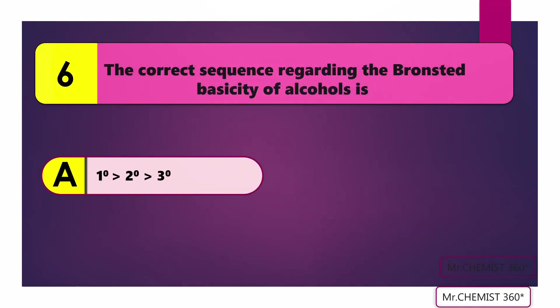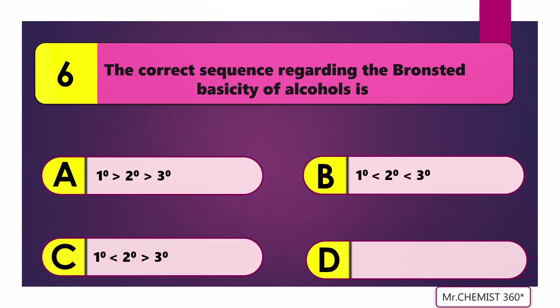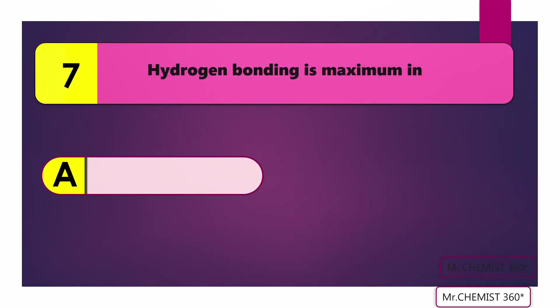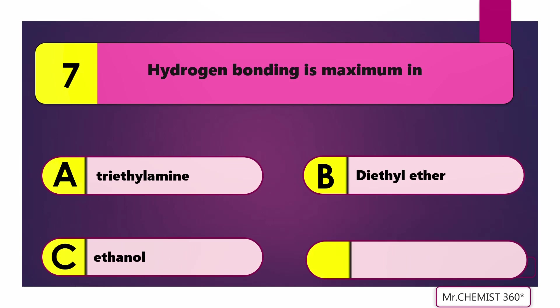Question 6: The correct sequence regarding the Bronsted basicity of alcohol is? Answer: Primary alcohol less than secondary alcohol less than tertiary alcohol. Question 7: The hydrogen bonding is maximum in? Answer: Ethanol.